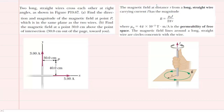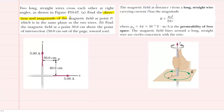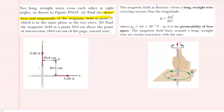Just take a moment to pause the video and reread the question first before listening on. In part A, we are asked to find the direction and magnitude of a magnetic field at point P, and before we can calculate that we need to figure out the directions of the two magnetic fields.